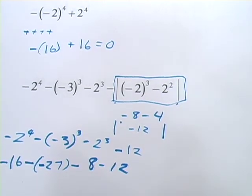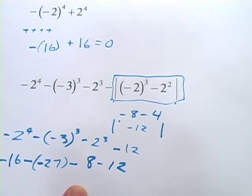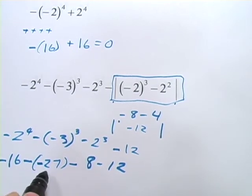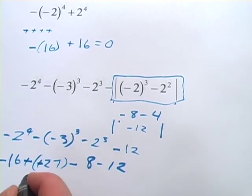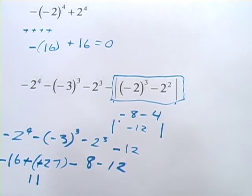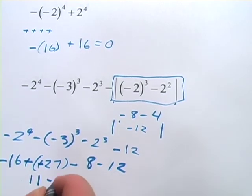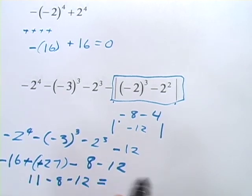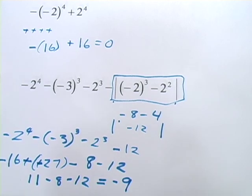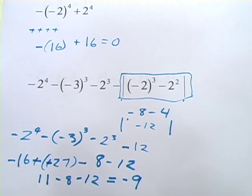Now we can start adding and subtracting — we just have to be careful with signs. We have negative 16 minus a negative 27, which is actually plus 27, and that comes out to 11. Then minus 8 minus 12. If you punch that into your calculator, you should get negative 9. So that's a little bit about raising negatives to powers.